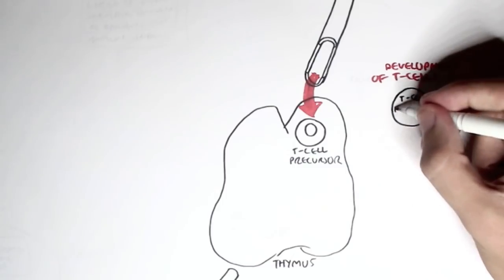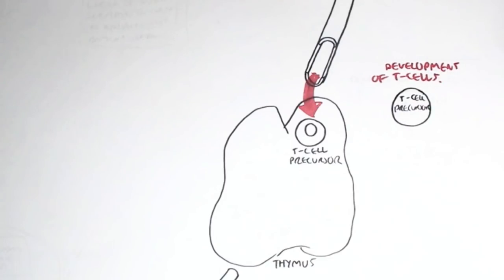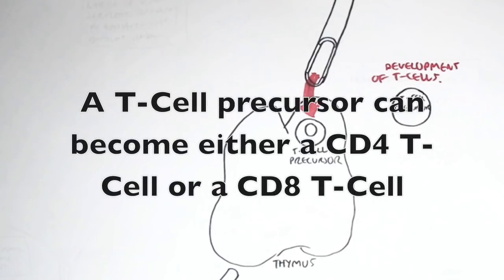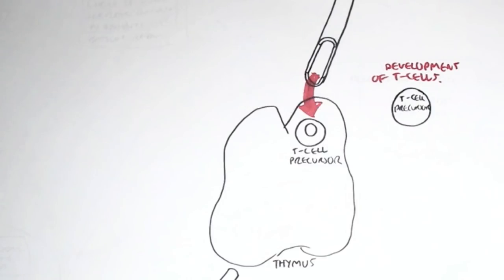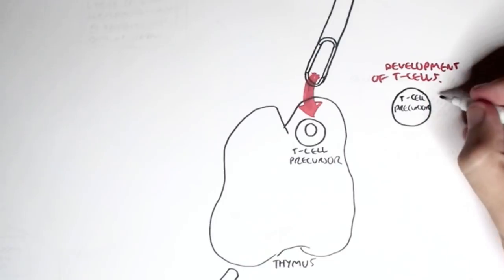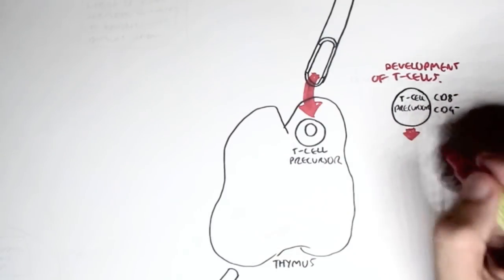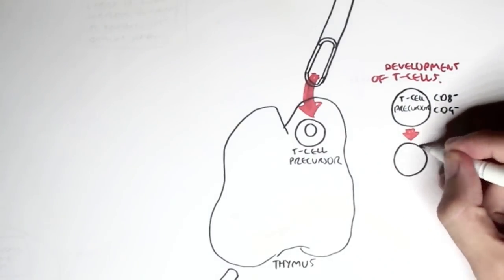So we start off with the T cell precursor. The T cell precursor expresses no sign of being an actual T cell. A T cell precursor in the thymus will become either a CD8 T cell or a CD4 T cell. CD8 and CD4 basically means the type of receptor it will have or express. In a T cell precursor stage, it expresses none of these. So we write this T cell precursor as CD8 negative and CD4 negative, meaning it contains no T cell receptor CD8 and no T cell receptor CD4.